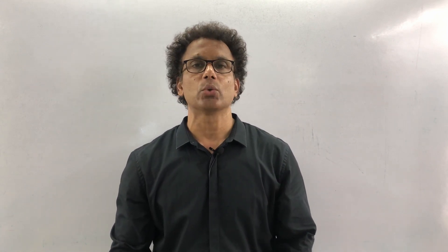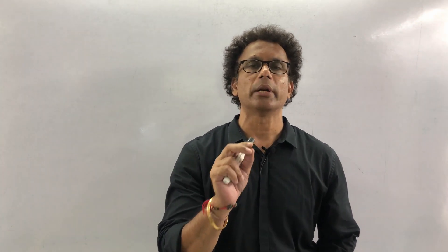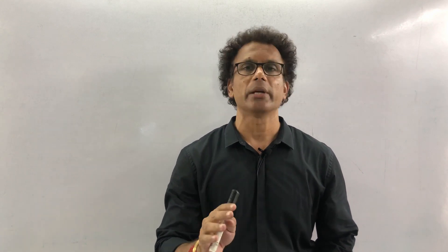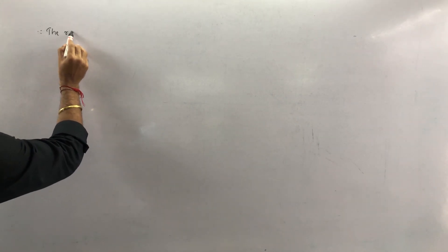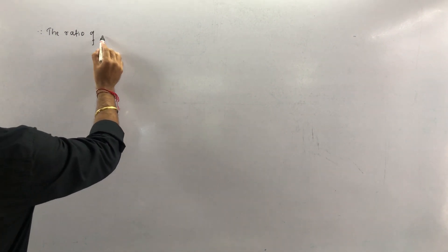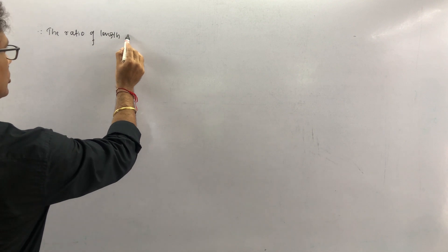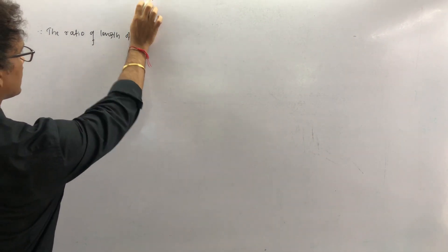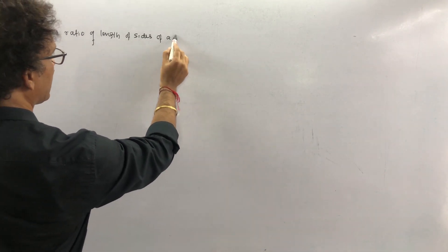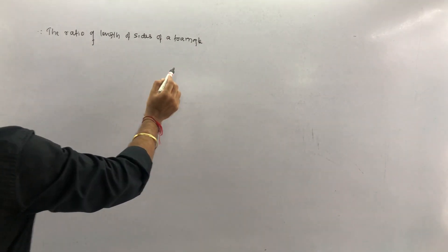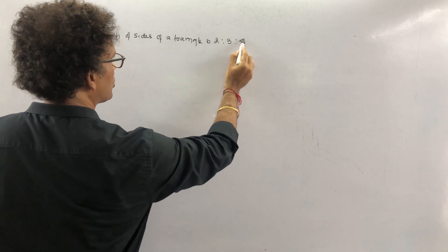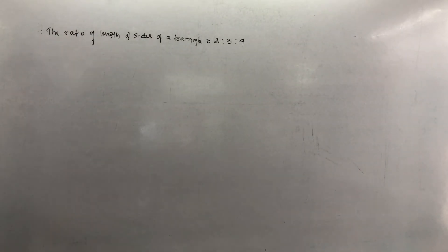Check problem set sum number 3. The perimeter of a triangle is 14.4 cm and the ratio of the length of its sides is 2:3:4. The ratio of the sides is written in simplest form. We have to find the actual side lengths first, and then do the construction.